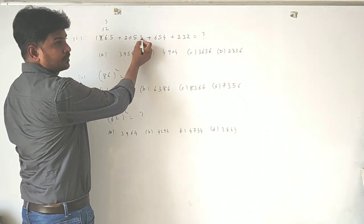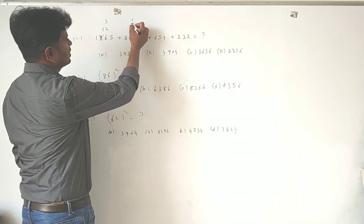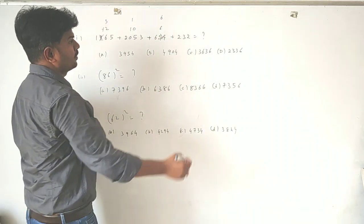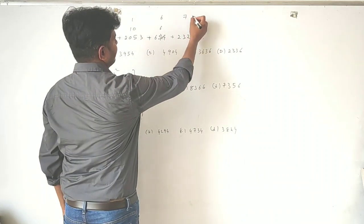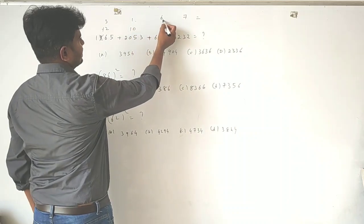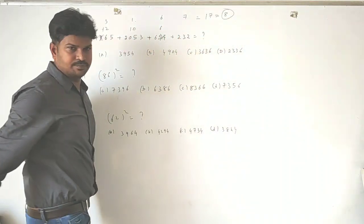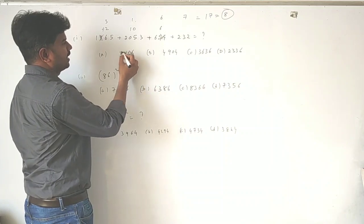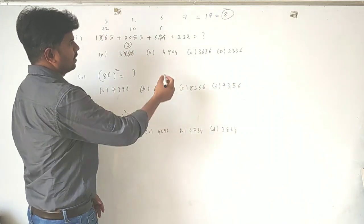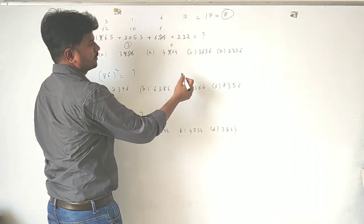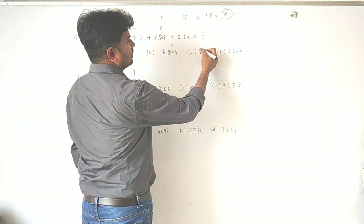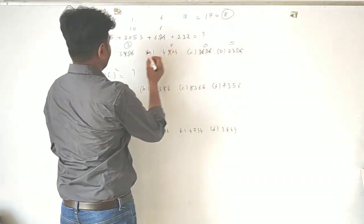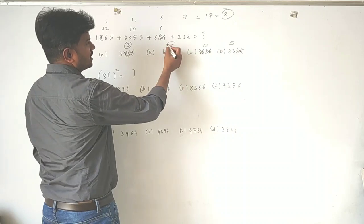Continuing: 5 plus 3 is 8, plus 2 is 10, whose digital sum is 1. Next, 5 plus 4 is 9 — ignore it — only 6 remains, so its digital sum is 6. Then 2 plus 3 is 5, plus 2 is 7. Adding all individual digital sums: 3 plus 1 is 4, plus 6 is 10, plus 7 is 17, whose digital sum is 8. Now check with the options: option B has 9 — ignore it, 5 plus 4 is 9 — ignore it, and 3 remains, giving digital sum 3. Since the question's digital sum is 8 and option B's digital sum matches, the answer is B.